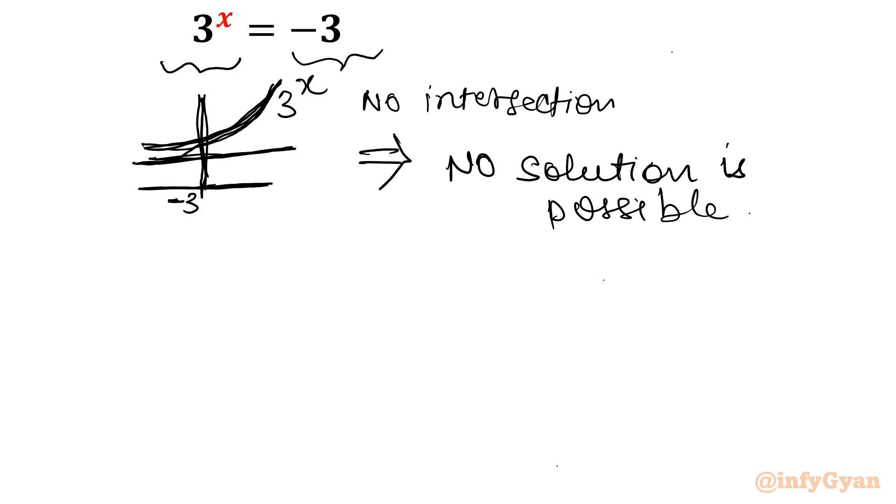Second approach we can think about - many approaches are possible. You can consider the algebraic way also. Second approach is I will take ln both sides. Let me take ln: ln 3 power x is equal to ln of negative 3.